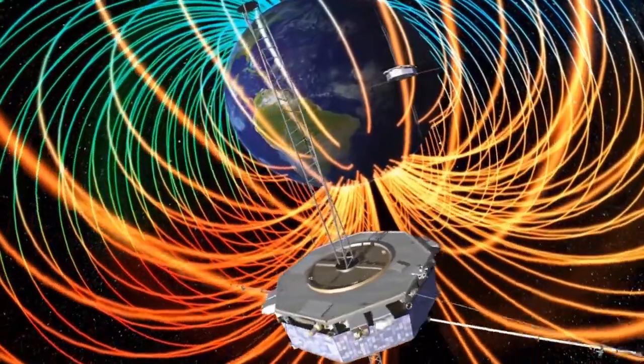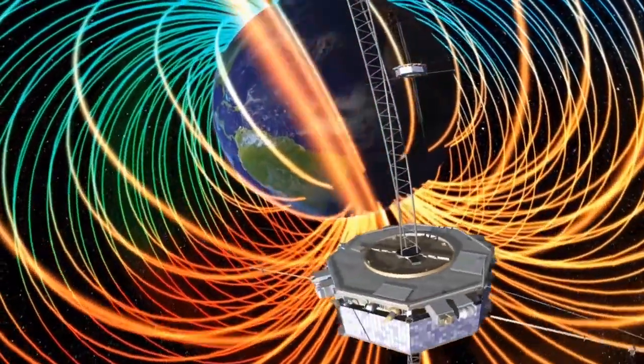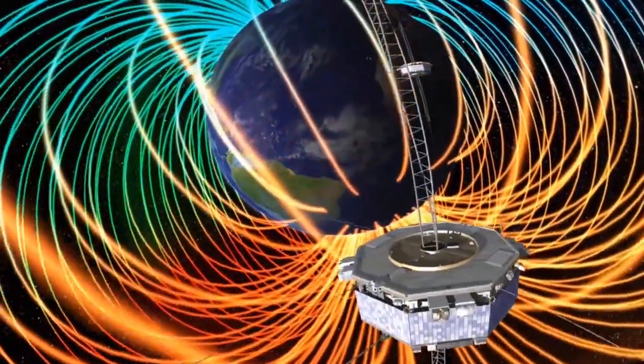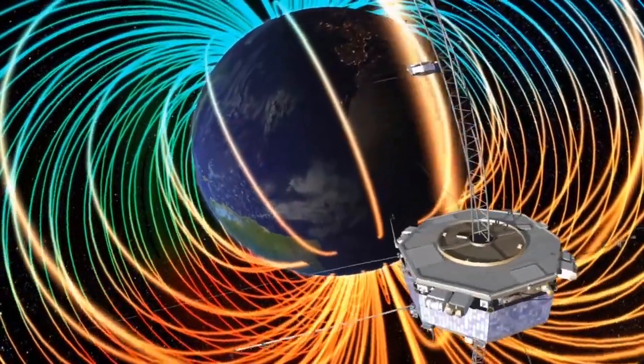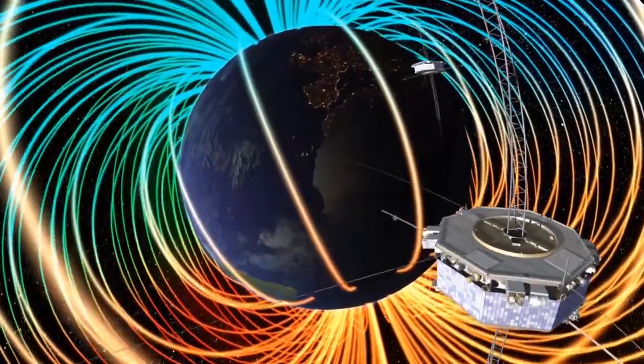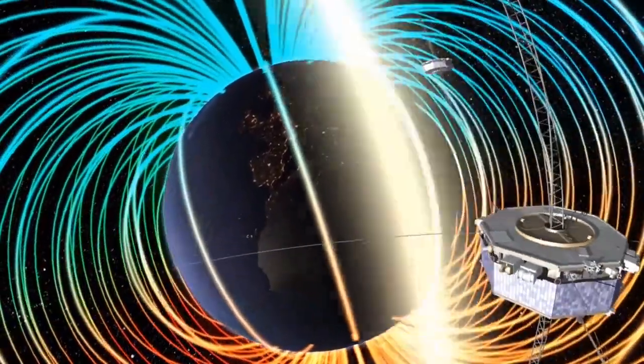The MMS orbit was designed to fly precisely in the places where reconnection occurs. The discoveries from the mission will also tell us about reconnection in the Sun's atmosphere, in other stars, and in the vicinity of black holes and neutron stars.